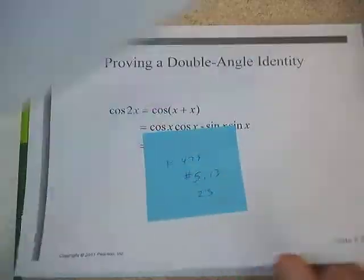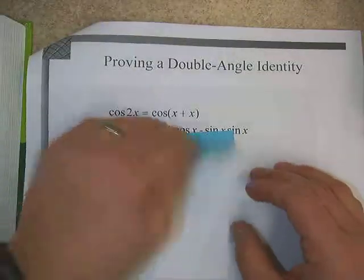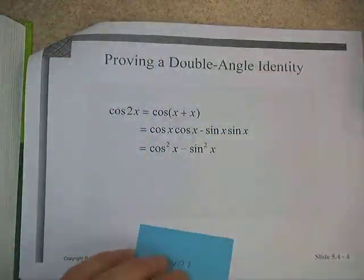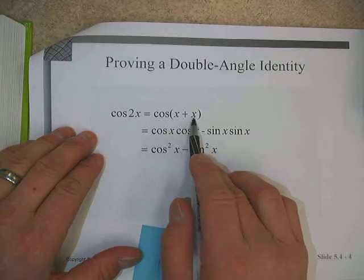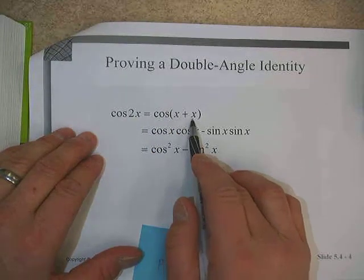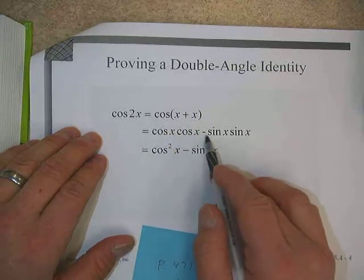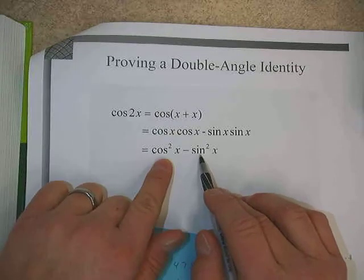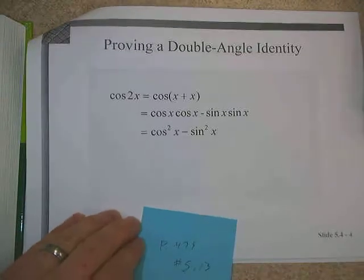So let's go ahead and take a look at the first one. The first one is just a proof of one of the cosine ones. If we have cosine of 2x, if we write it as cosine of x plus x, now we have an addition formula. We learned in the last chapter that we can rewrite that as cosine x cosine x minus sine x sine x. And of course, that also means cosine squared x minus sine squared x.